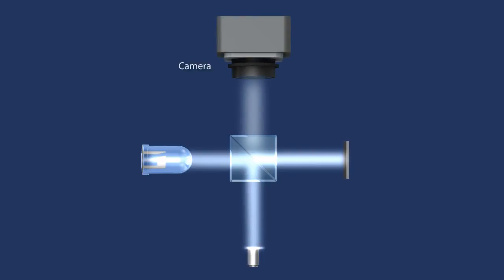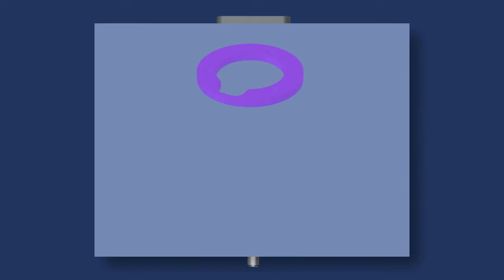During the vertical scan, the interference patterns are captured by the video camera, while the software computes the topography from this data.